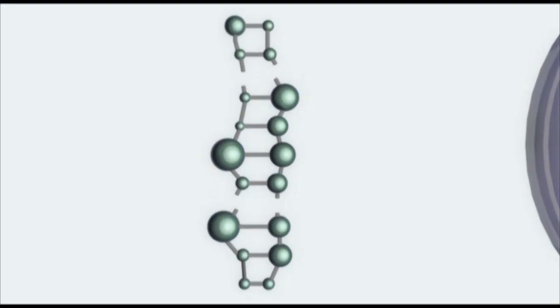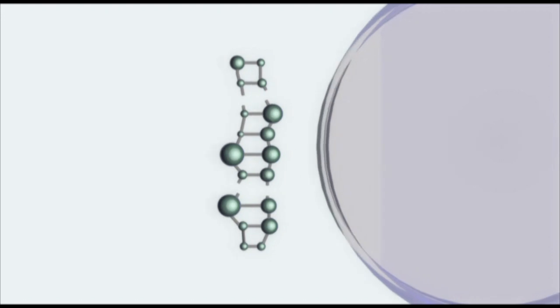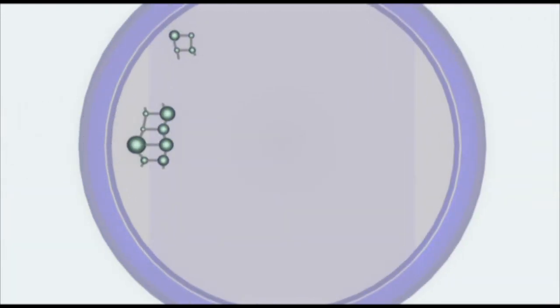Agarose gel electrophoresis is a common method of isolating regions of DNA. A gel tray is prepared, with DNA samples placed in wells along one side.